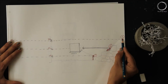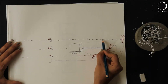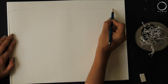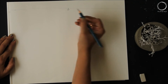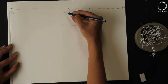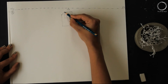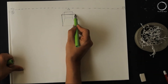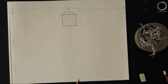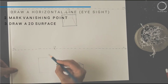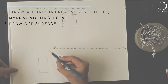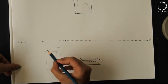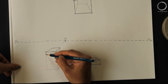Now in the case of the third person, the horizontal line is above the box. With this, you'll understand the third step easily. As shown, draw a 2D surface according to the position and the thickness of the object.